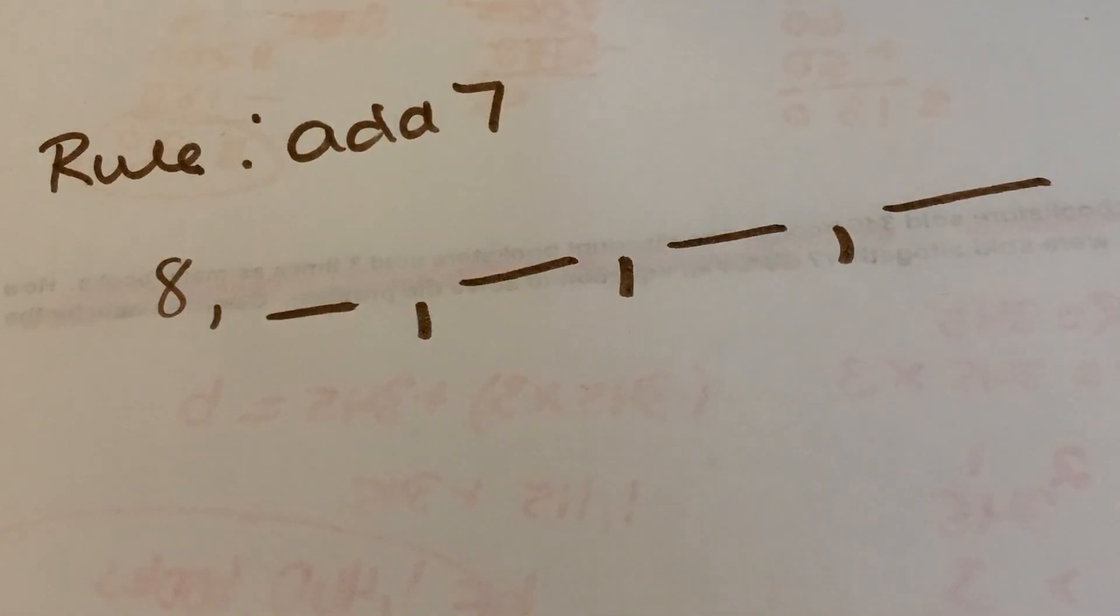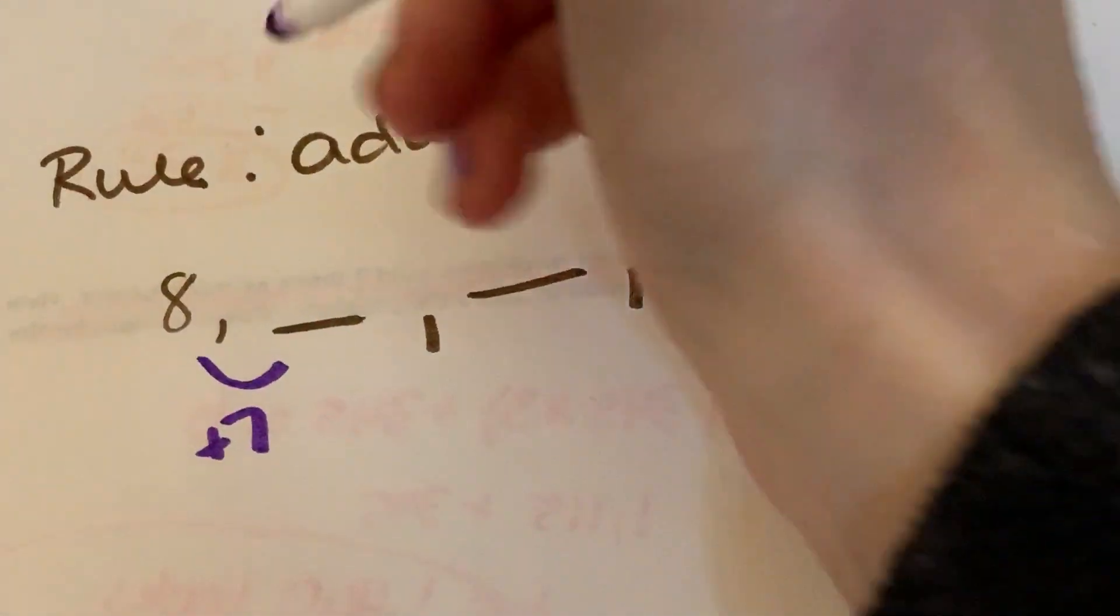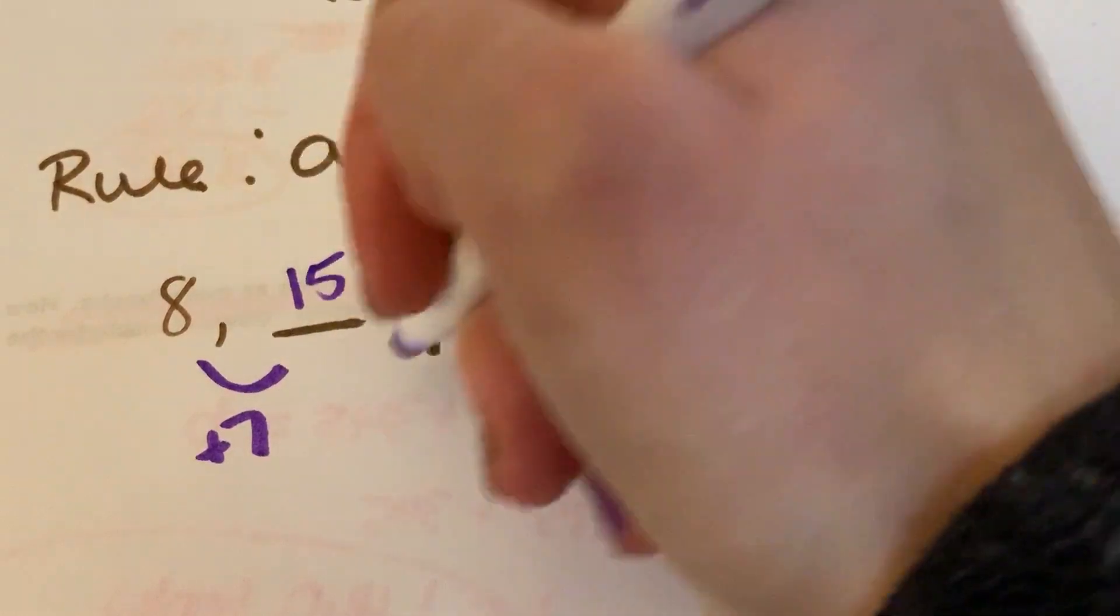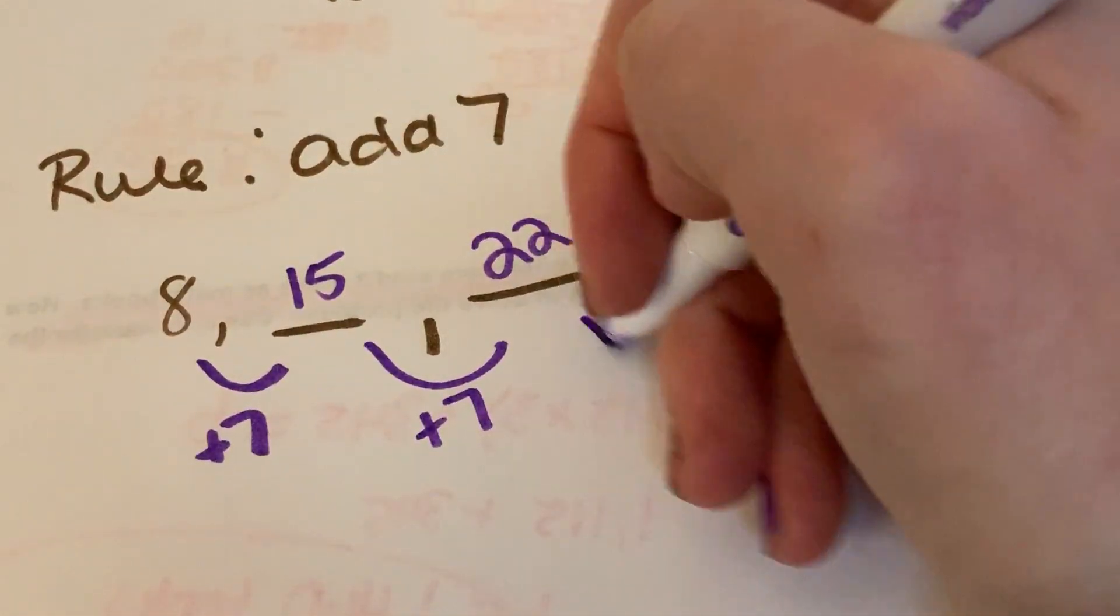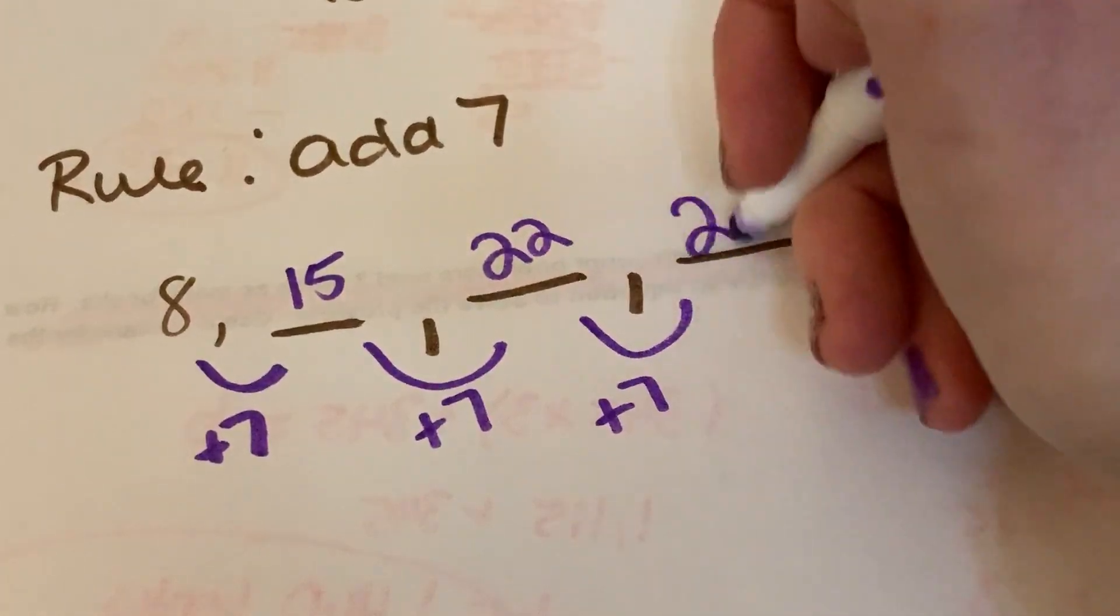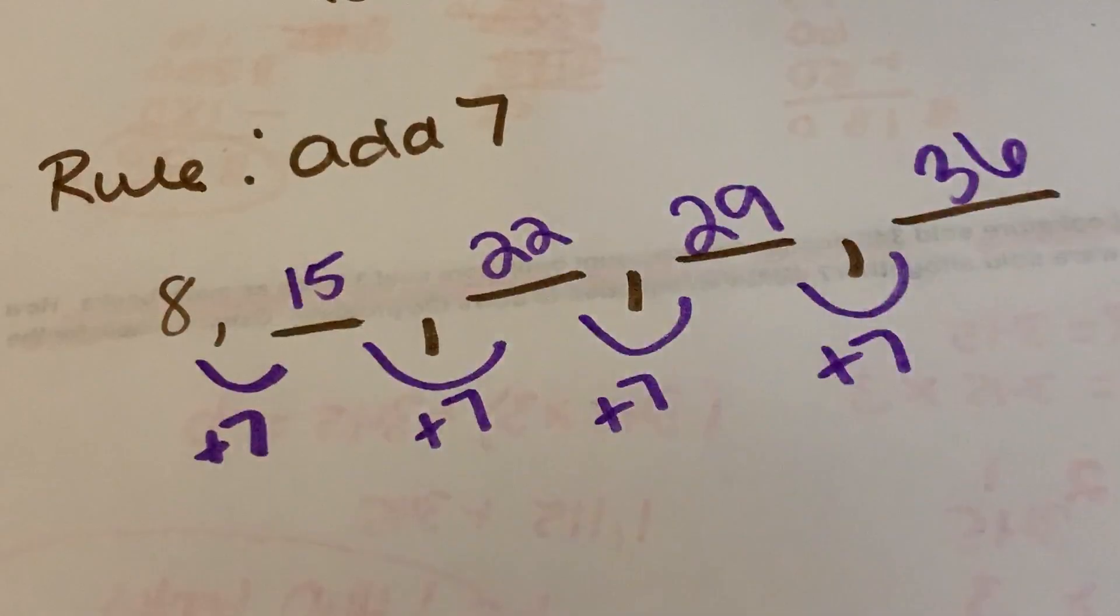All right, so 8 plus 7 gives us 15, plus 7 more gives us 22, plus 7 more gives us 29, plus 7 more gives us 36.